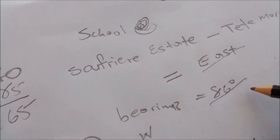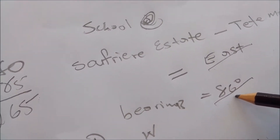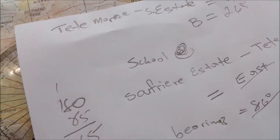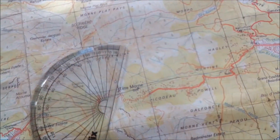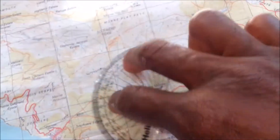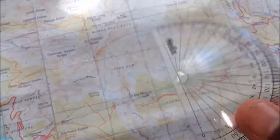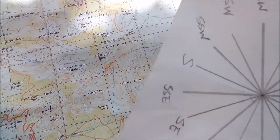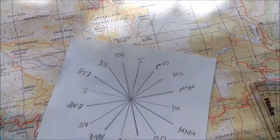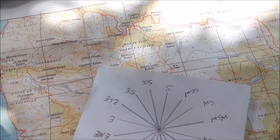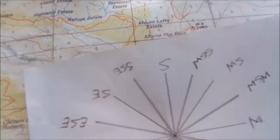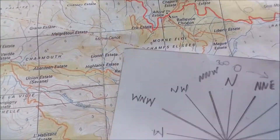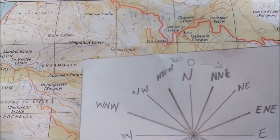On the other side it would be east at an 86-degree bearing. This is how you would calculate bearings and direction using a protractor and compass. There are some things you need to remember.